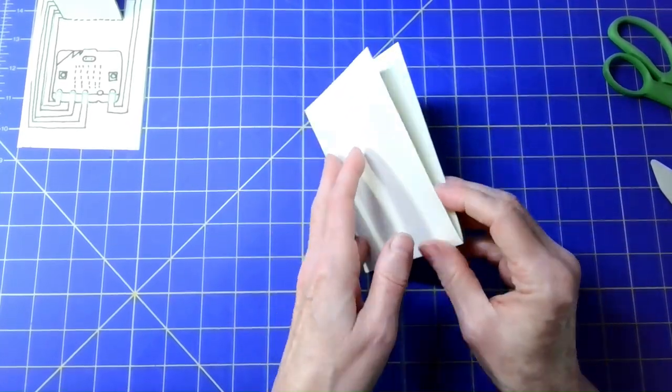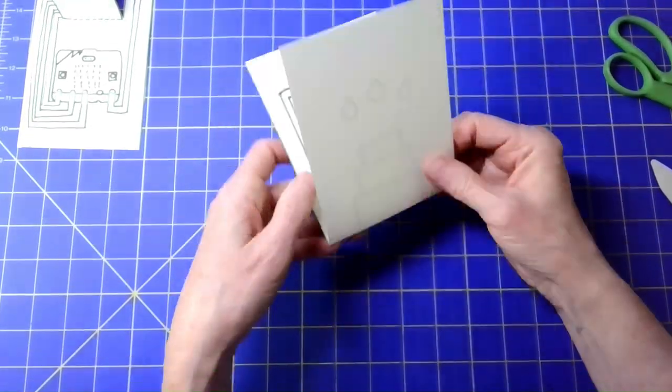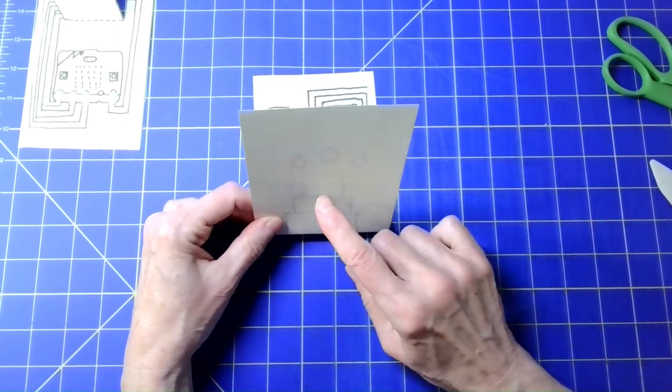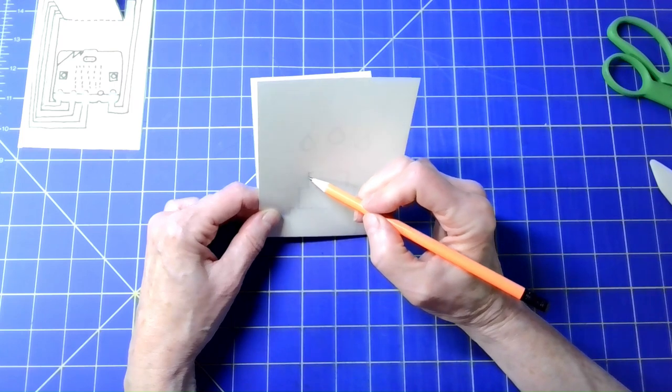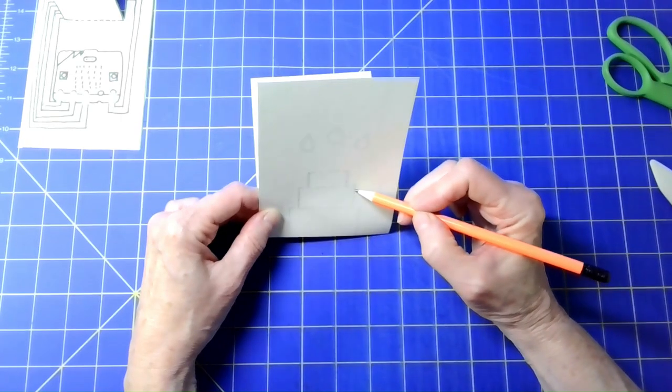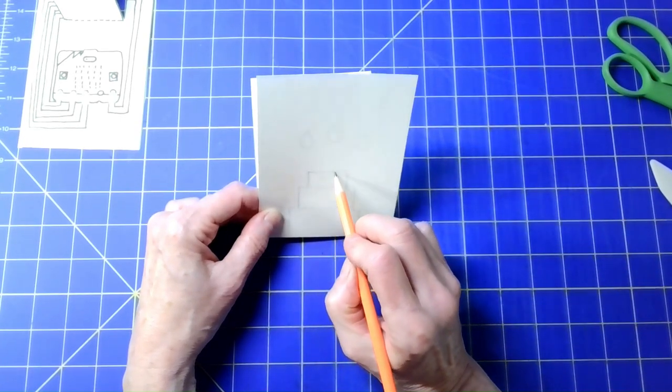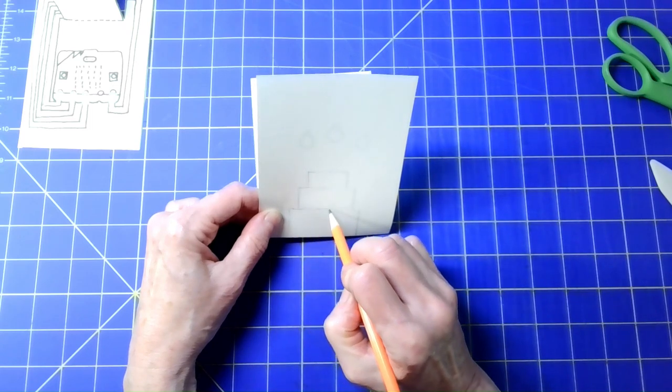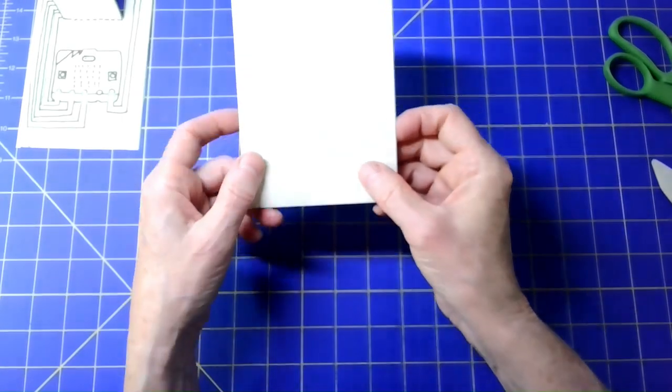So next we're going to cut it, and because the template is printed on the other side, we kind of have to look through the light to see where we're going to cut. To make it a little easier, you might want to just trace it onto the back. There's the solid lines that get cut, and the dashed lines that get folded. Okay, that's all you need for that. And now we're going to start cutting.